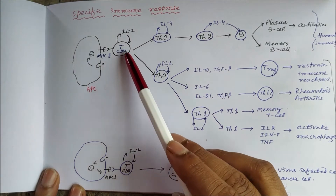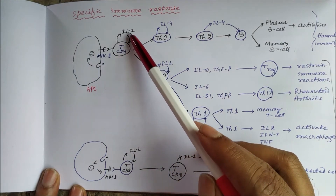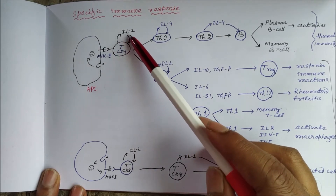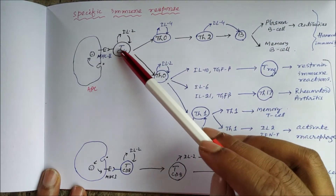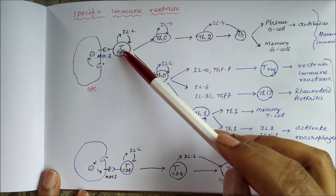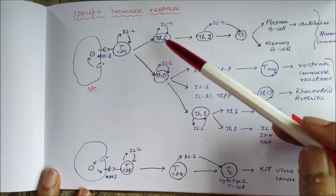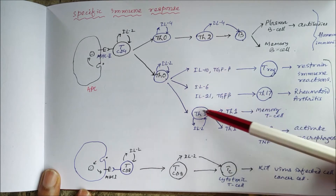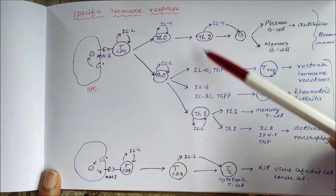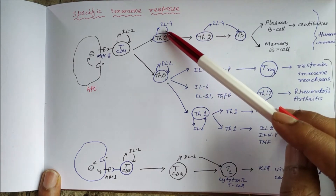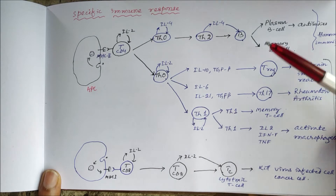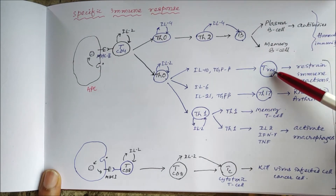When there is MHC2 and CD4 interaction, there is production of interleukin-2, which acts on the same CD4 T cells — this is called autocrine action of interleukin-2. The cells that release interleukin-2 are themselves the targets, leading to proliferation and differentiation into T helper 1 cells. T helper 2 cells are formed by autocrine action of interleukin-4, while interleukin-2 autocrine action produces T helper 1 cells. There are also T helper 17 cells and regulatory T cells.